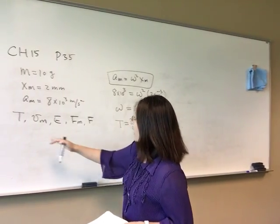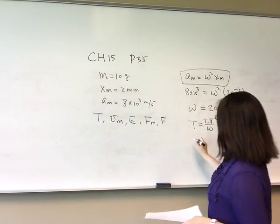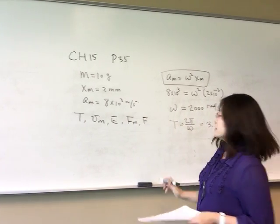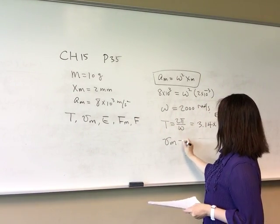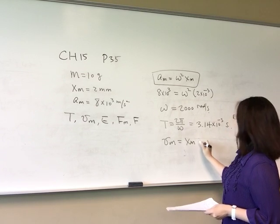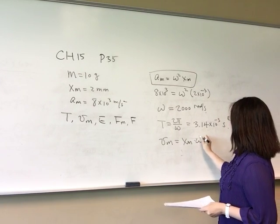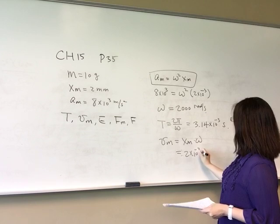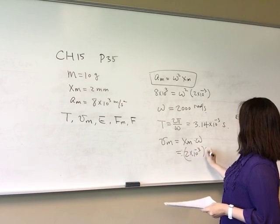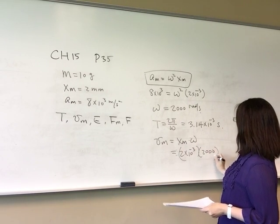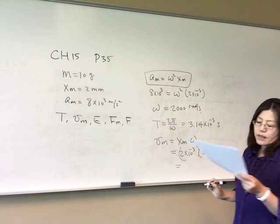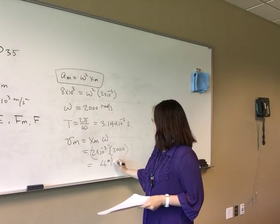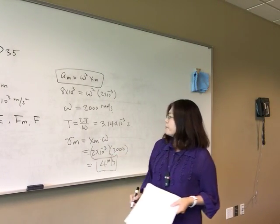We can also find maximum speed Vm. Since Vm equals omega times xm, we have 2000 times 2 times 10 to the negative 3rd, giving Vm equal to 4 meters per second.